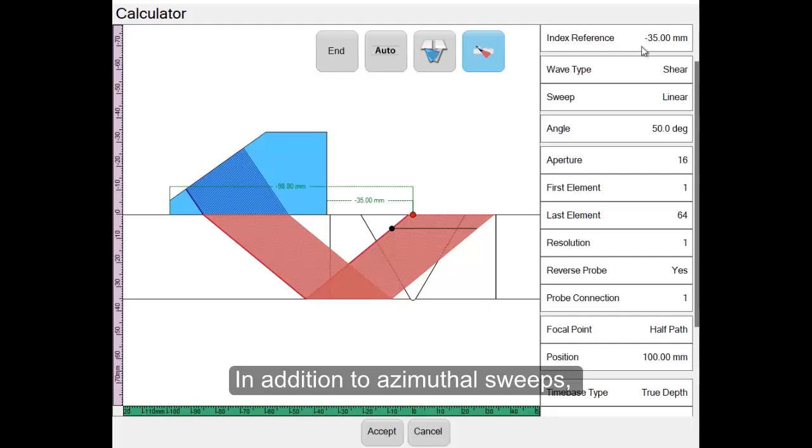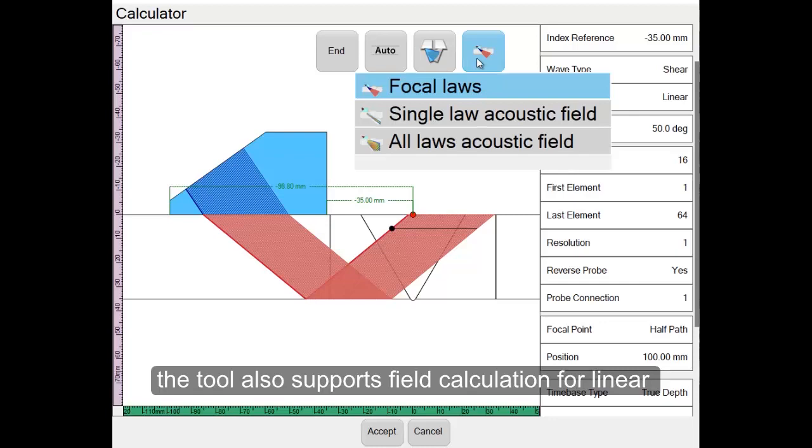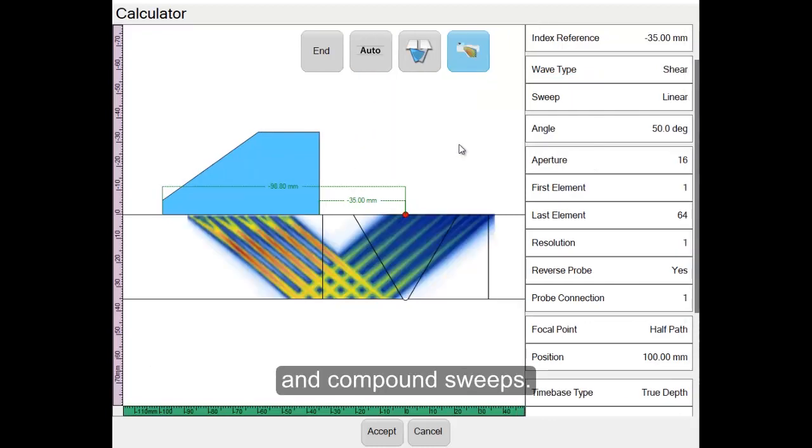In addition to azimuthal sweeps, the tool also supports field calculation for linear and compound sweeps.